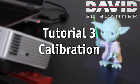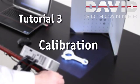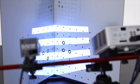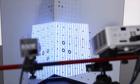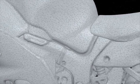David 3D Scanner Tutorial 3: Calibration. In the previous tutorials we adjusted the projector and camera to the object that we want to scan. Now we need to calibrate it so that the David software learns the exact scanner configuration. Only then can it create precise scan data.